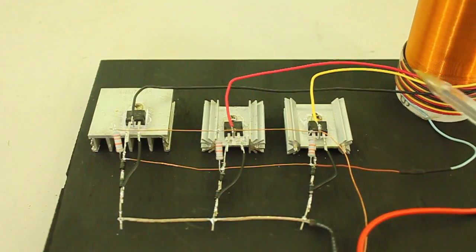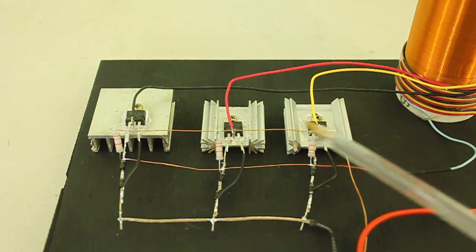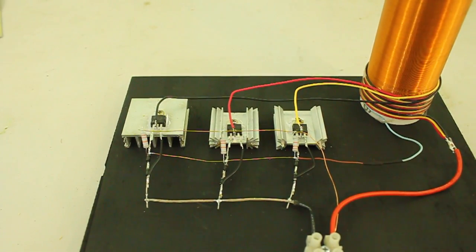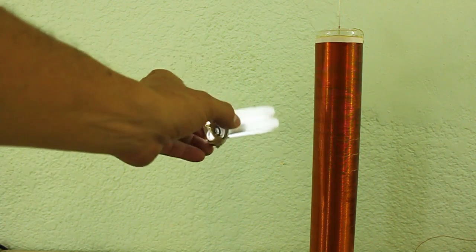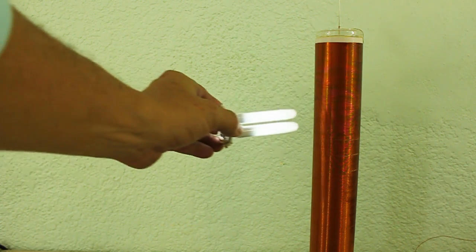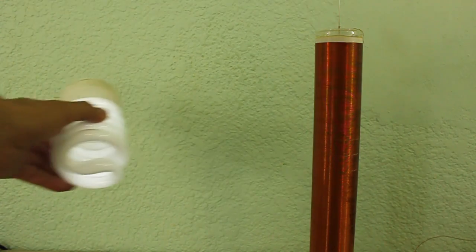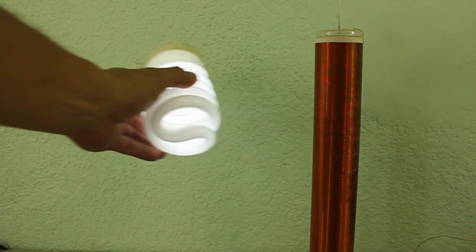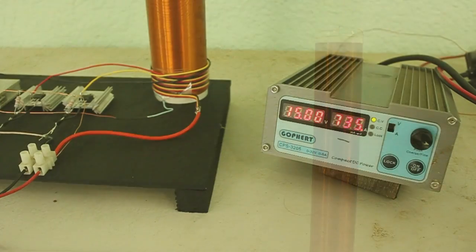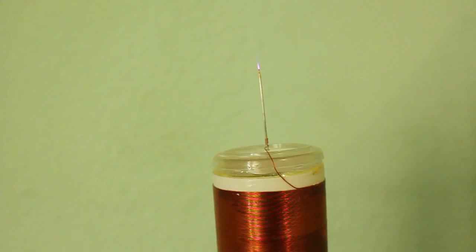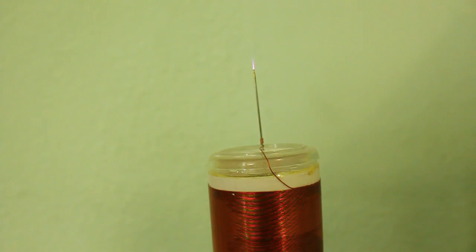Finally, you can see that each of the three primaries are connected to the collectors of each transistor. So, let's now connect our coil to see how it works. Let's try first with an input voltage of 15 volts. The coil is drawing a little above 700 milliamps. And you can see the little spark at the top of the coil.